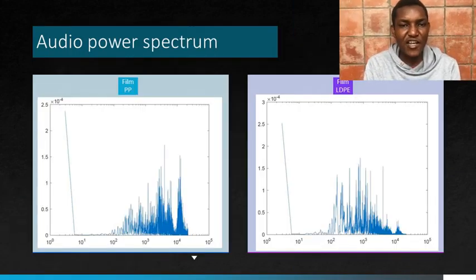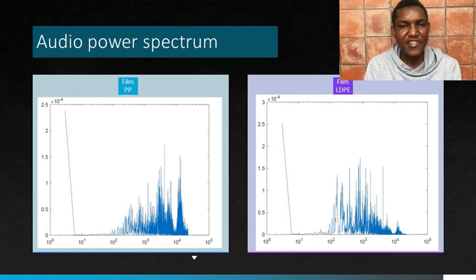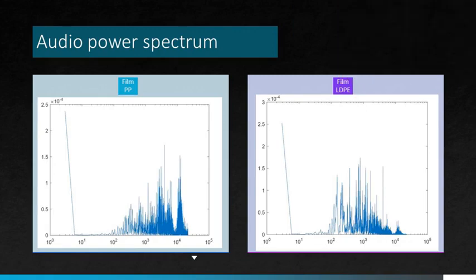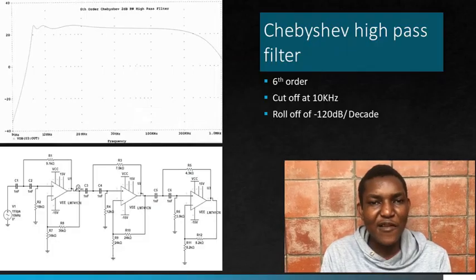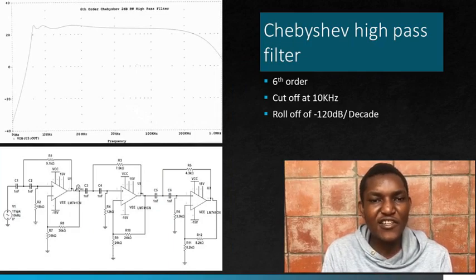From the power spectrum, we noticed that after 10 kHz the power of PP is greater than that of LDPE. Then we designed a high-pass filter to cut off signals with less than 10 kHz.